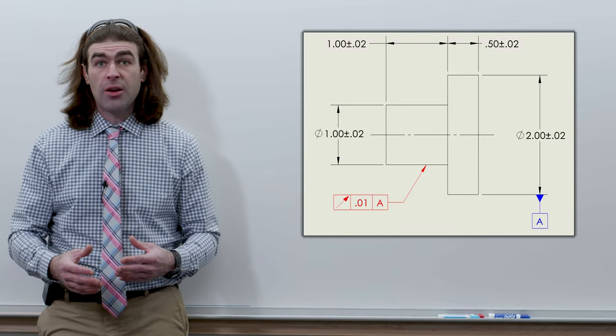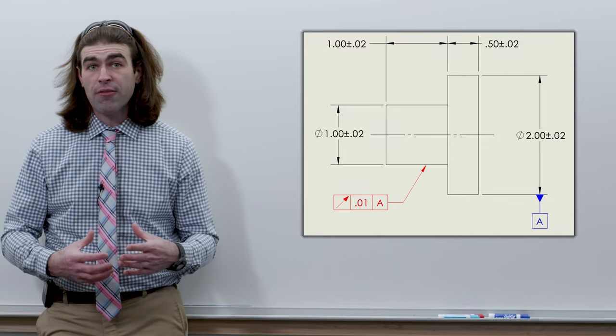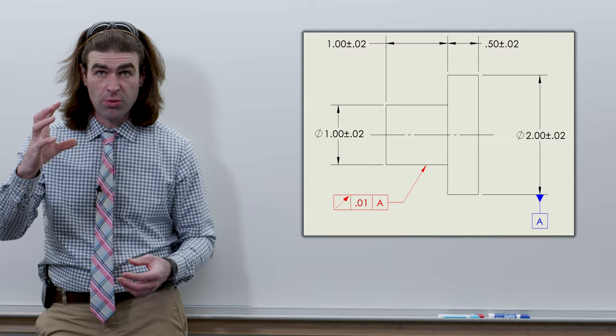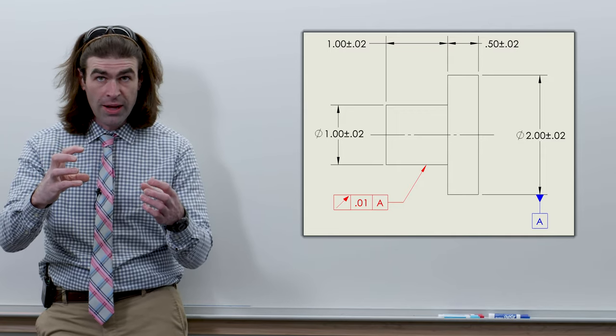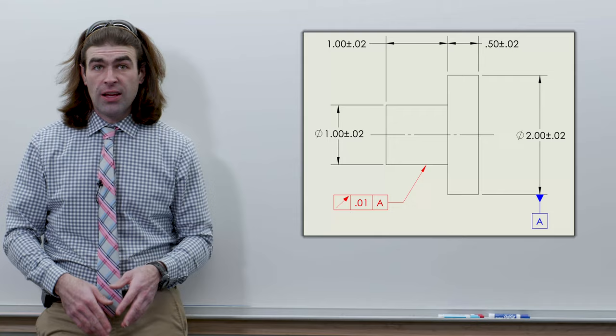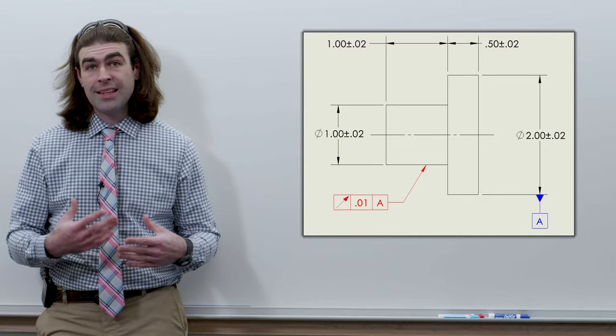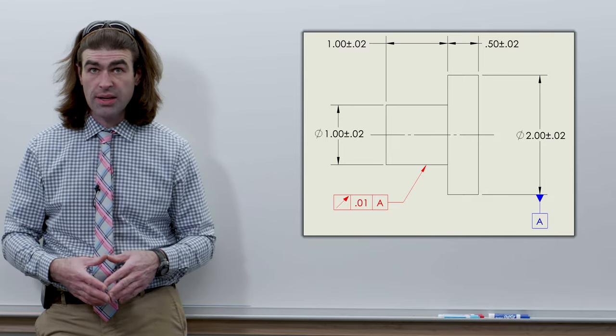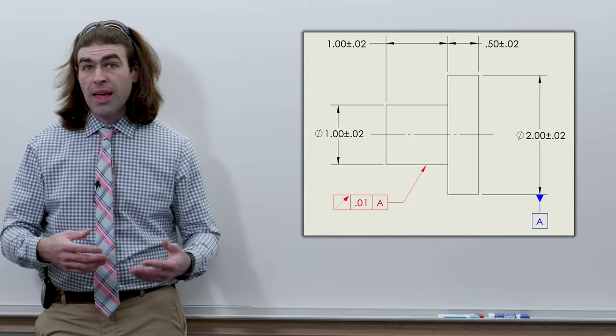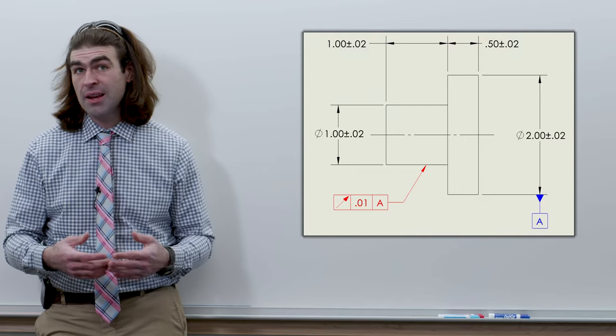Now in runout tolerances the datum references are always at RFS, regardless of feature size. So you have to make full contact with the datum with whatever inspection equipment you're using. So if you have a chuck you're supposed to collapse onto the part until it doesn't wiggle around anymore and then you can rotate it 360 degrees. You cannot use any fixed gauging for runout tolerances. Now on this part the size is not controlled with the runout. The size can vary more than the runout tolerance, so you can still check it with calipers, your two-point checks to make sure the size is within tolerance, and then everything else would be controlled with that runout tolerance.